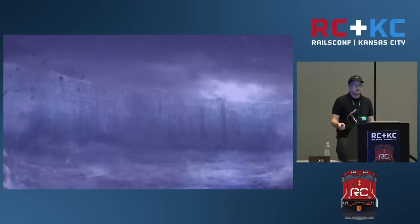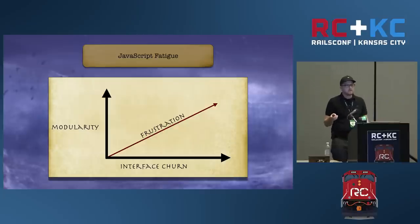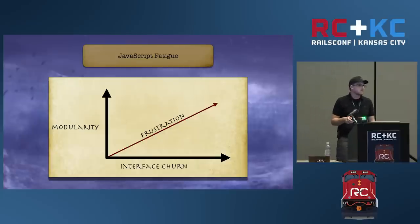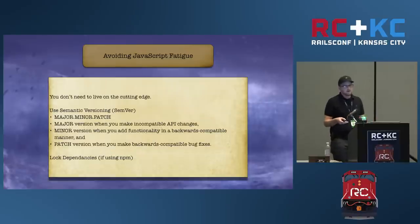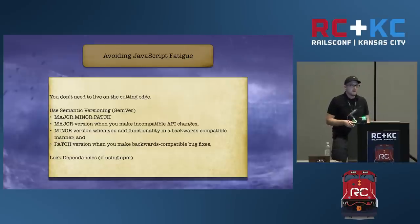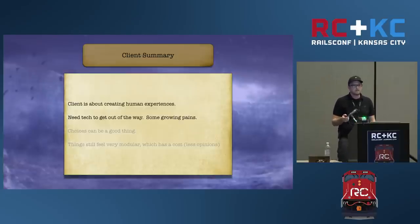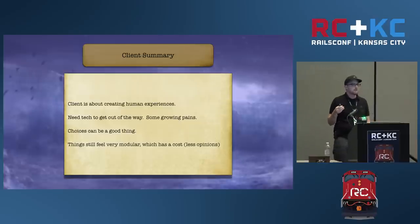Before moving away from the client, I want to talk about something we often hear in the JavaScript community — JavaScript fatigue. In my opinion, a lot of the fatigue we're seeing is due to some of the modularity in the ecosystem combined with the churn in the interface. The more modularity we have and the more churn we have in our interfaces, the more frustration the community has. Probably the best way to avoid this is to know that when you're using cutting edge, there's a high probability that your interfaces will change. We see this happening a lot now in the React ecosystem. Also, lock your dependency versions — I've seen many times where a patch update that's supposed to be backwards compatible ends up breaking things. The client is about creating human experiences; we need tech to get out of the way.